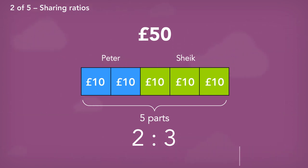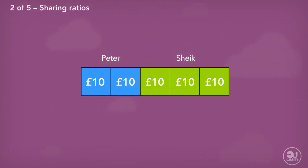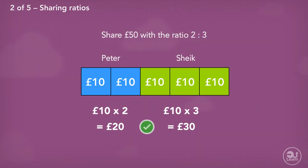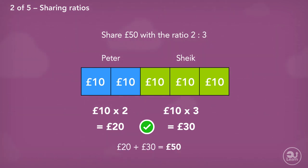Now that we know what one part is worth, the rest of this question is pretty straightforward. The first side of our ratio was worth two parts, so we multiply our one part by two, which gives us 20 pounds. For the second side of our ratio, we have three parts, so we multiply our one part by three, which gives us 30 pounds. So our final answer: 50 pounds divided by the ratio 2 to 3 is 20 pounds and 30 pounds. We can double check by adding 20 pounds and 30 pounds together, which gives us back our original amount of 50 pounds.